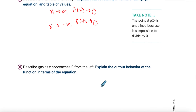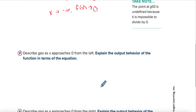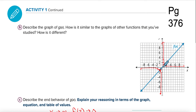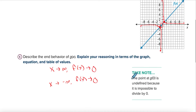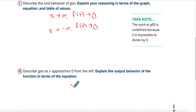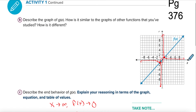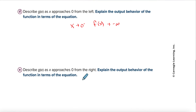Now describe what happens as x approaches zero from the left, and then from the right. As I approach zero from the left, the graph goes straight down — it goes to negative infinity. So as x approaches zero from the left, y goes to negative infinity. As x approaches zero from the right, y goes to positive infinity. The plus sign in the corner just means from the right. That's new stuff we haven't done before.